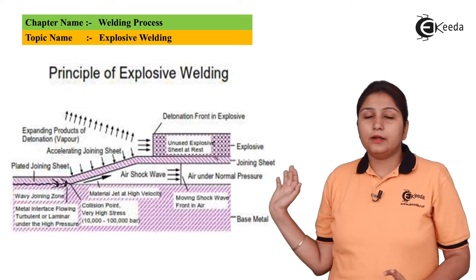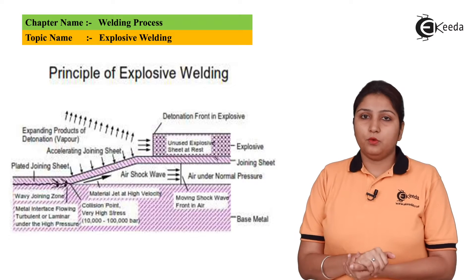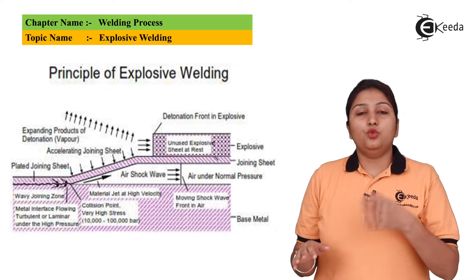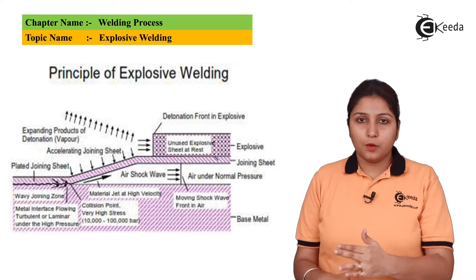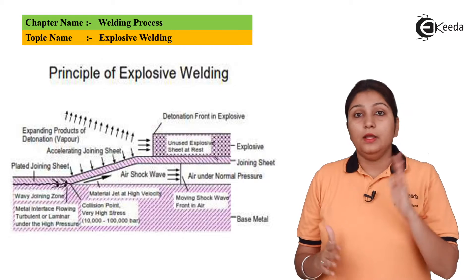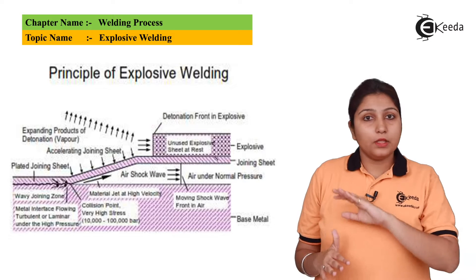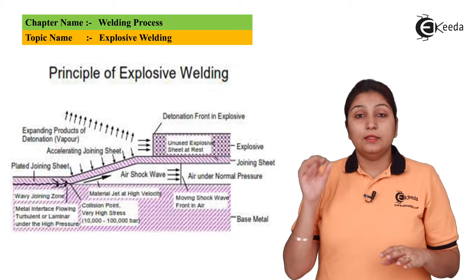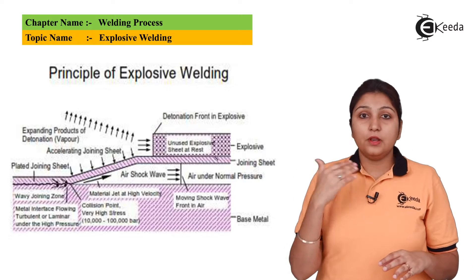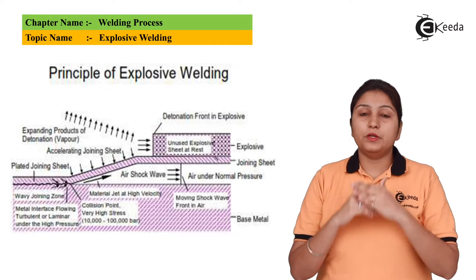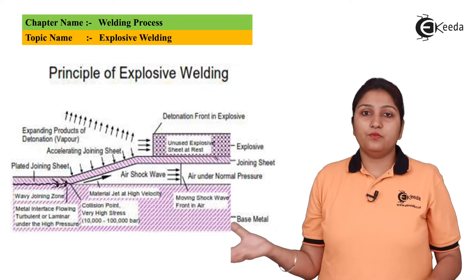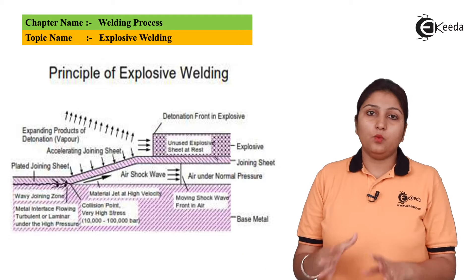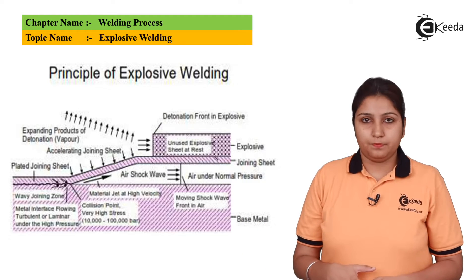This is an exact diagram of explosive welding. Two clads or two workpieces are shown. After doing the explosion, the additional air which is between the two clads escapes from the side and your welding is done.